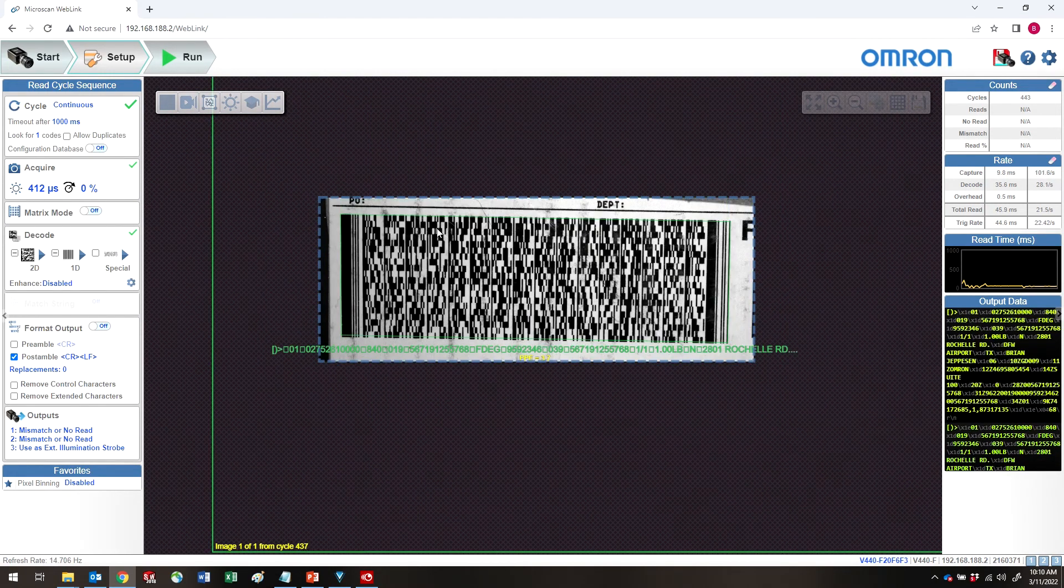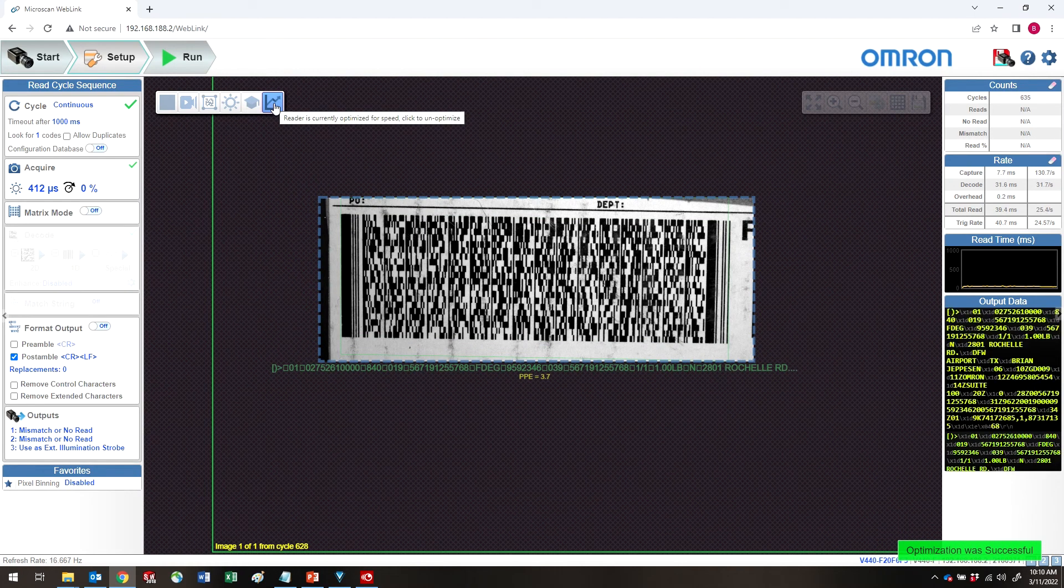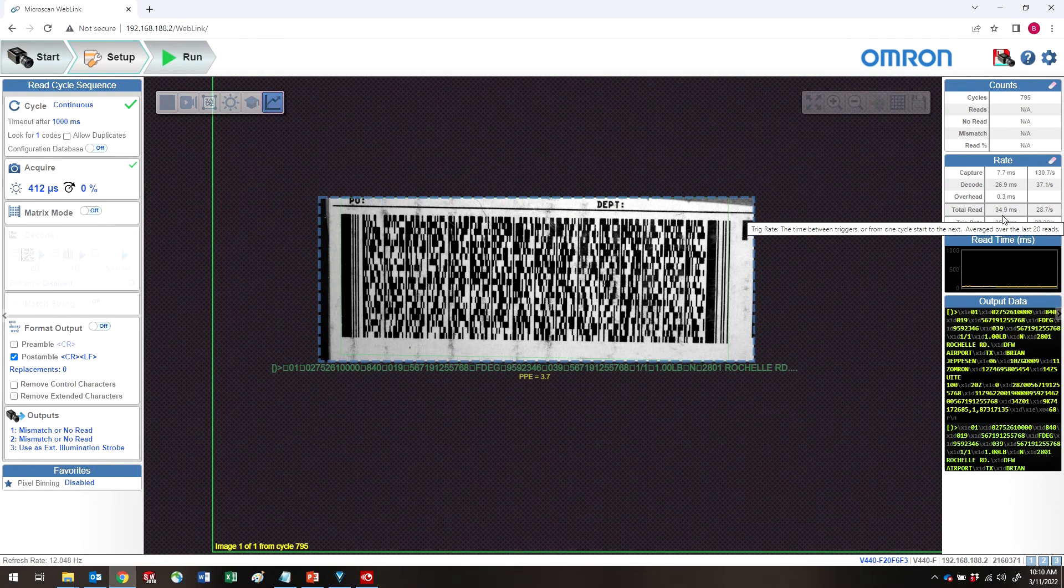And I'm just going to zoom back in. And now, click this button on the right to optimize the speed. And when optimization is complete, you can now see that we are operating around 35 milliseconds for code read, so significantly faster. And now you're all set up and ready to go.